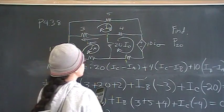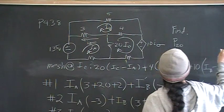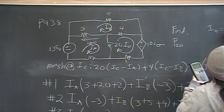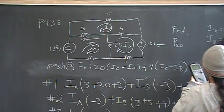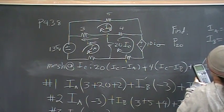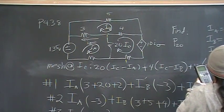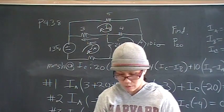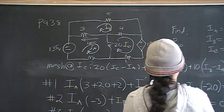So that gives me IA is equal to 64.8 amps. IB is equal to 39 amps, and IC is equal to 68.4 amps.